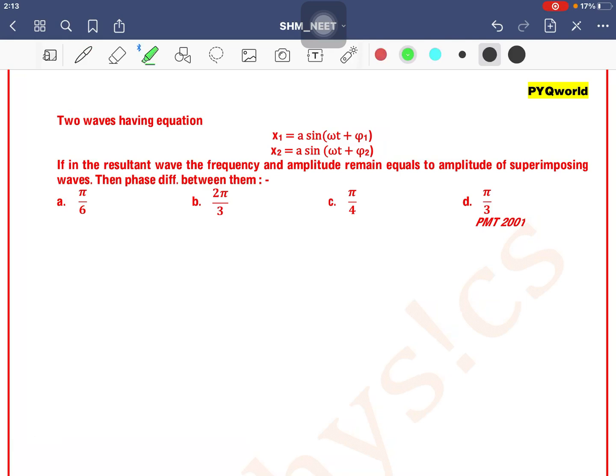Two waves having equation x1 = a1 sin(ωt + φ1) and x2 = a sin(ωt + φ2). If in the resultant wave the frequency and amplitude remain equal to amplitude of superimposing waves, then phase difference between them is: